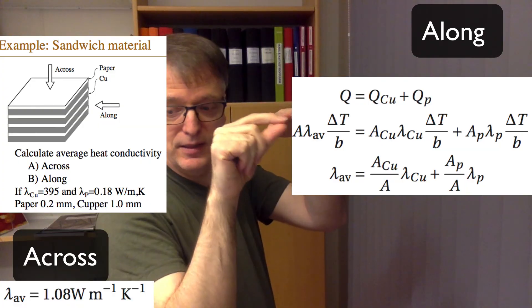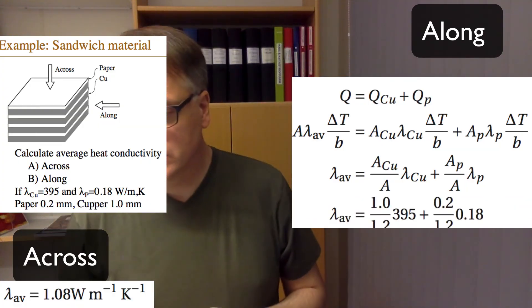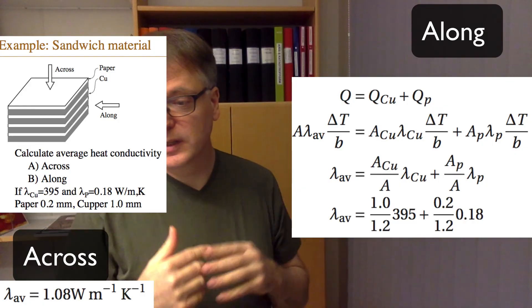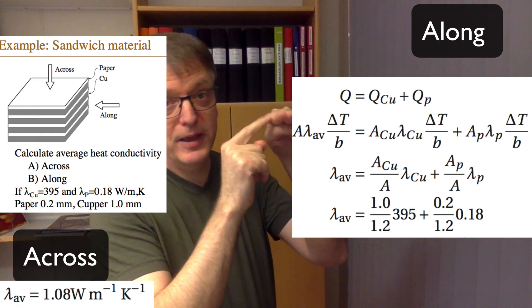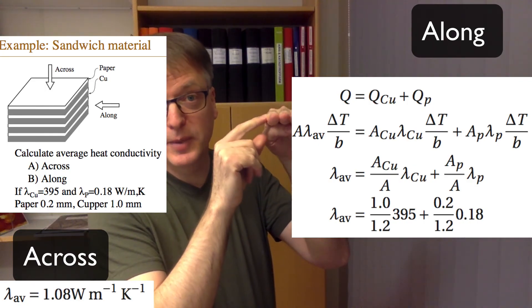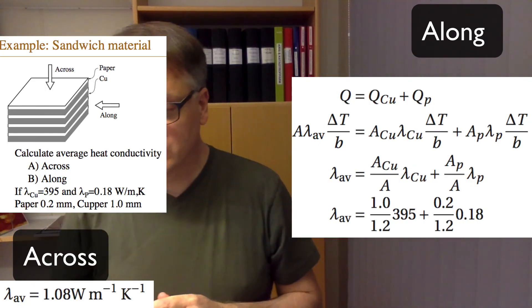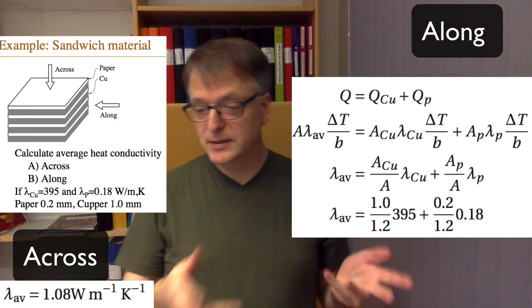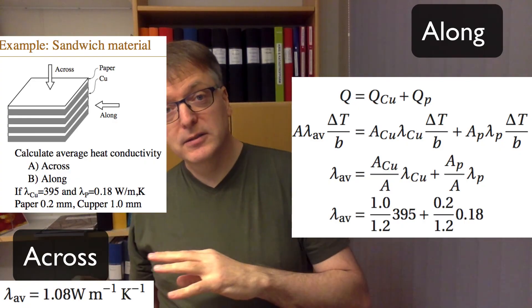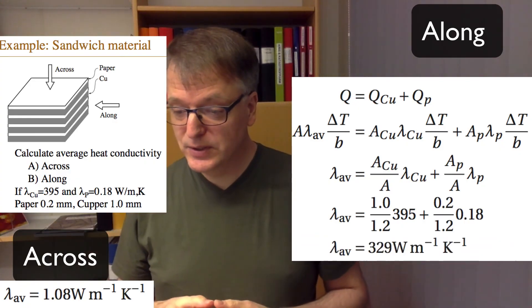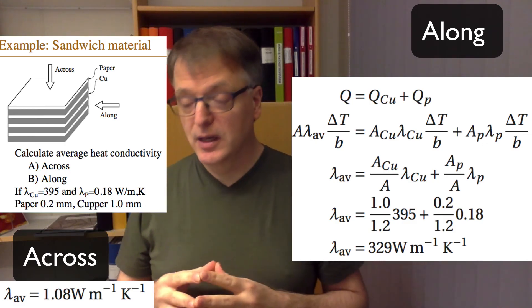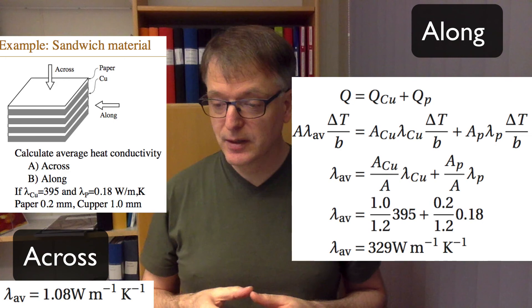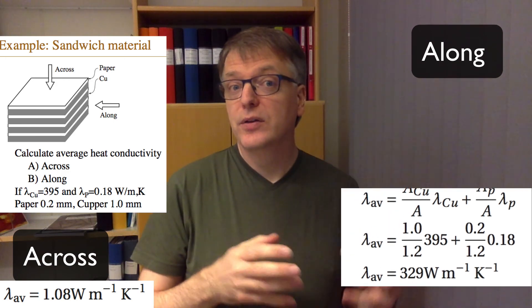The area of the copper divided by the total area is the same as the thickness of the copper divided by the total thickness. Entering all the numbers, we get an average conductivity of 329 watts per meter kelvin, a lot closer to the copper.